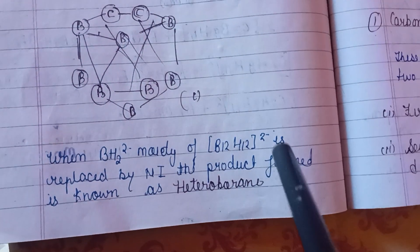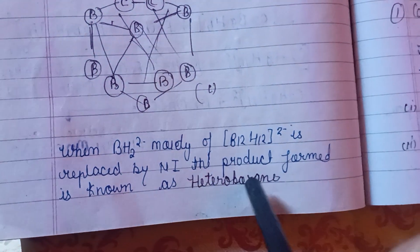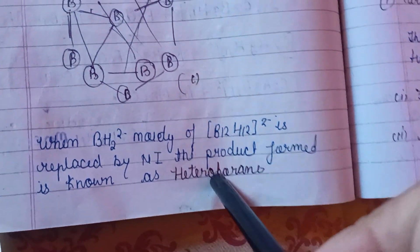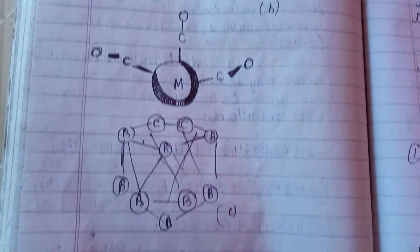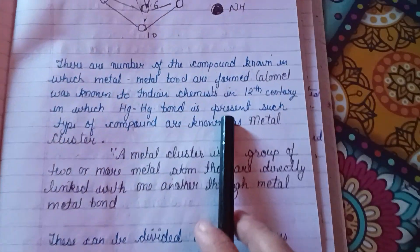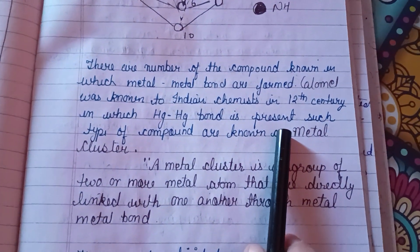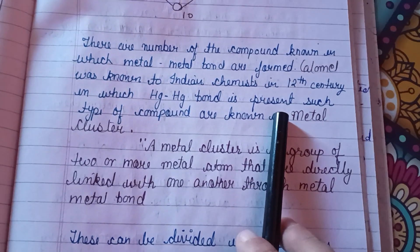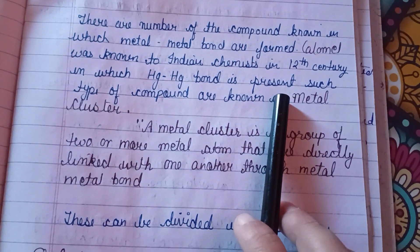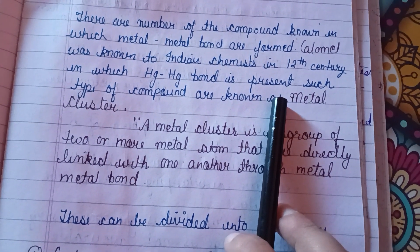When the BH2 2⁻ moiety is replaced, the product formed is called heteroborane. A number of compounds in which metal-metal bonds are formed are known. The compound in which an Hg–Hg bond is present is known as a metal cluster.